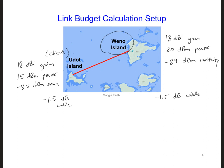Spend a minute calculating the link margin for the 15-kilometer link between Wena and Udach. See if you can first calculate how much power — the power density S — that is generated in the vicinity of the antenna on Udach by the antenna in Weno. Then calculate how much of that power is received by the antenna on Udach.